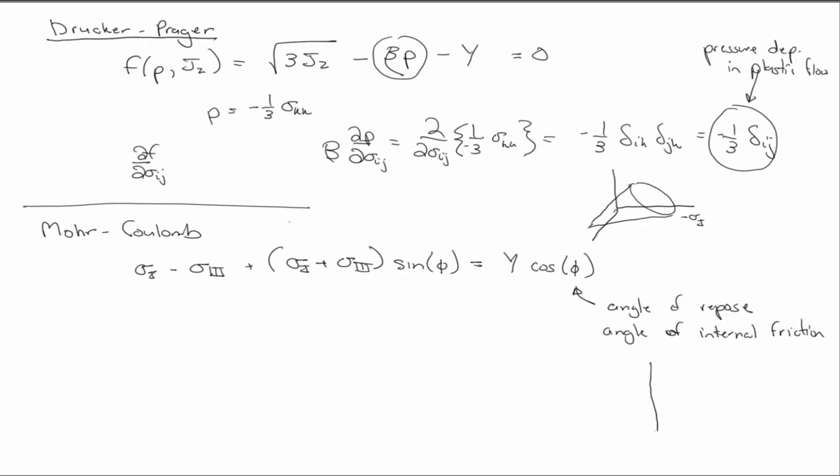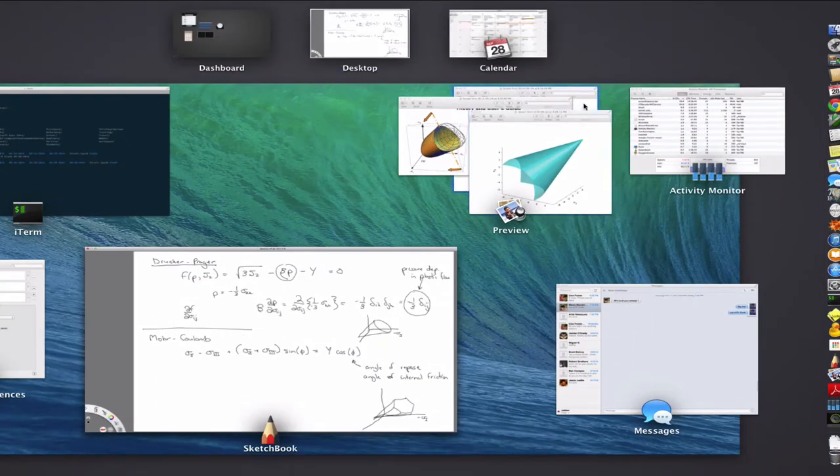Well, with that in mind, we can sort of guess what the Mohr-Coulomb model looks like, and that is, it's still Tresca sort of on the end, but then some sort of conic or hexagonal-type pyramid in the opposite direction.